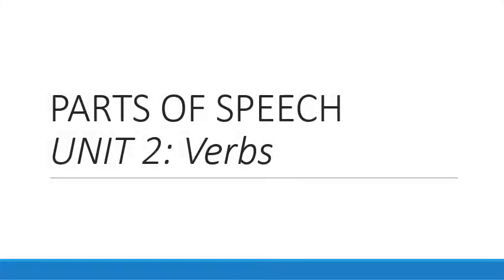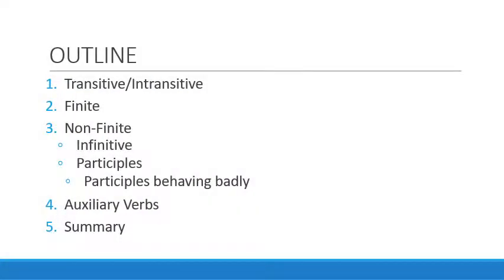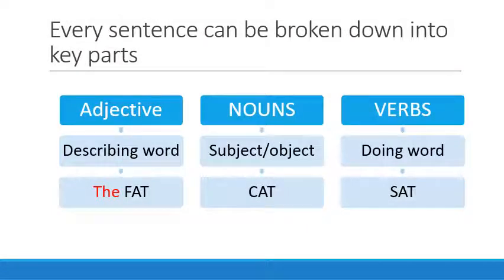Welcome to Unit 2. In Unit 2, we shall be discussing verbs. In the outline of this lesson, we'll be talking about transitive and intransitive verbs. In Unit 1, we spoke about the fact that every sentence can be broken down into key parts. We can have an adjective, a noun, and a verb. Of course, we can have more parts than this, but this all depends on what the function of that particular word is. Today, we'll be focusing on verbs. Verbs are very important parts of speech because they are the glue of the sentence and hold the central idea.